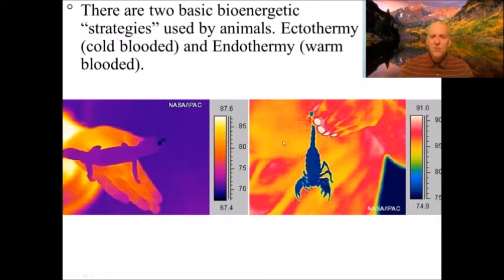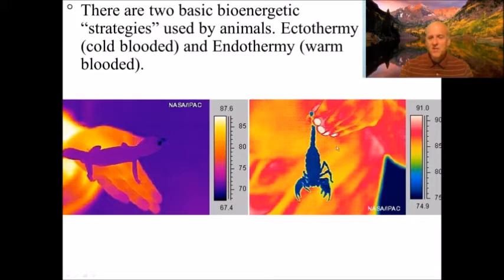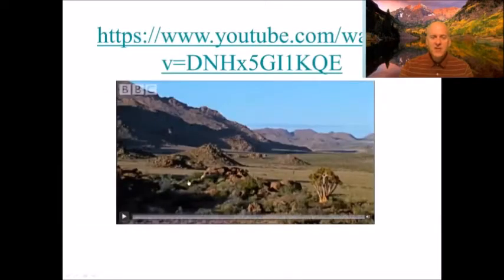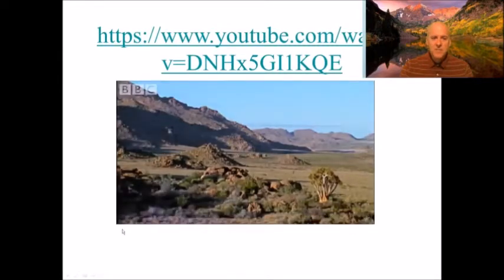Here are thermal images showing the difference. The brighter the color, the hotter the temperature; the bluer the color, the colder. You can see a cold-blooded lizard sitting in the hand of a warm-blooded person — the person is much warmer than the lizard. With the scorpion it's even more impressive — the scorpion's body temperature is way lower than the person's.